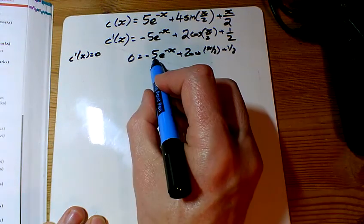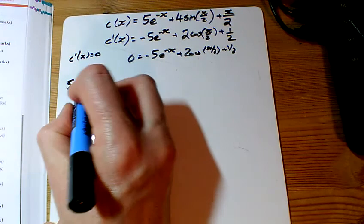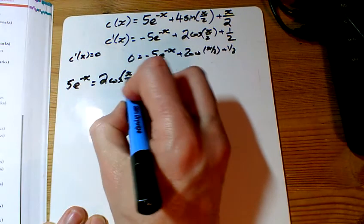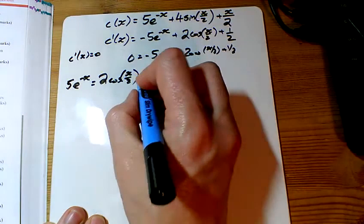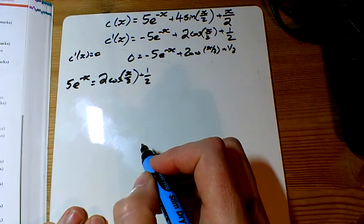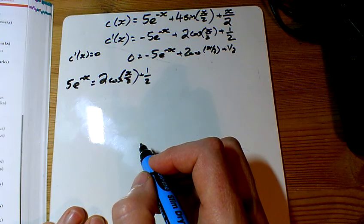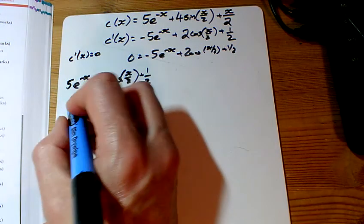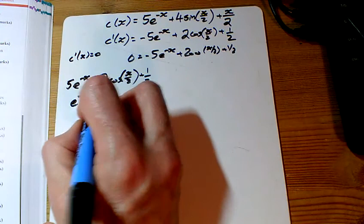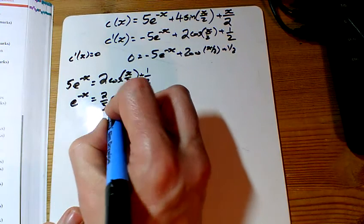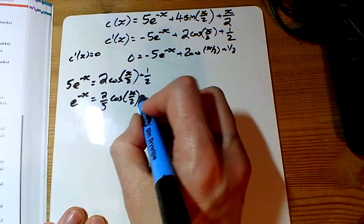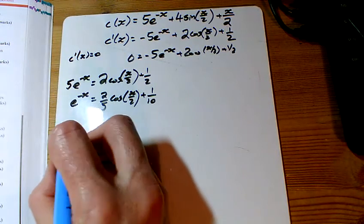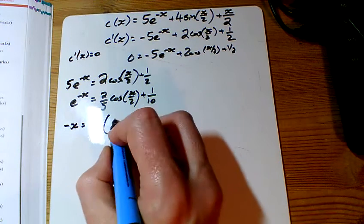So one way would be to add this to both sides. So if I've got 5e to the minus x equals 2 cos x over 2, and that's plus a half. And I'm going to divide that all by 5. So I've got 2 fifths cos of x over 2 plus, divided by 5 is 1 tenth. And then we're going to get rid of the e by ln-ing.